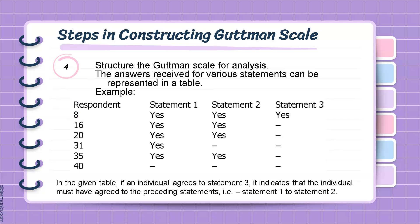Then, structure the Guttman's scale for analysis. The answers received for value statements can be represented in a table, just like what is shown here. For example, respondent number eight answered yes on statement number one, yes on statement number two, and yes on statement number three. While respondent number 35 answered yes for statement number one, yes on statement number two, and no on statement number three. So, in a given table, if an individual agrees to statement number three, it indicates that the individual must have agreed to the preceding statements — in other words, statements one and two.